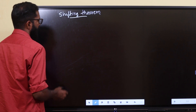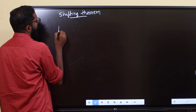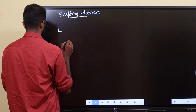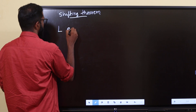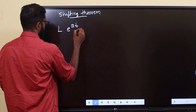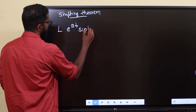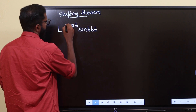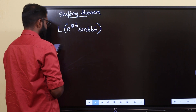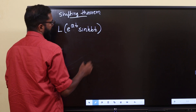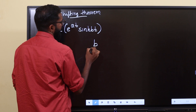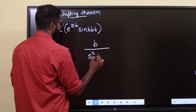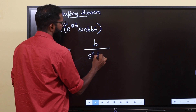Now let's find Laplace of e raised to at into sinh bt. Sinh bt gives b divided by s squared minus b squared, so applying the shifting theorem gives b divided by s minus a whole squared minus b squared.